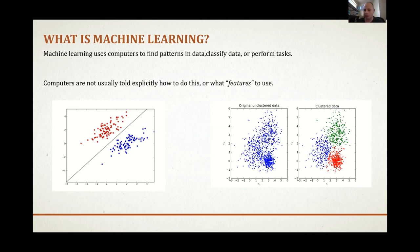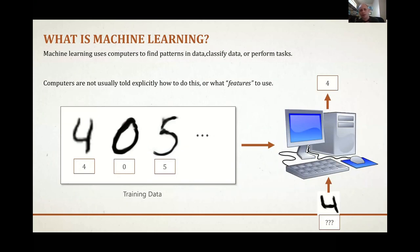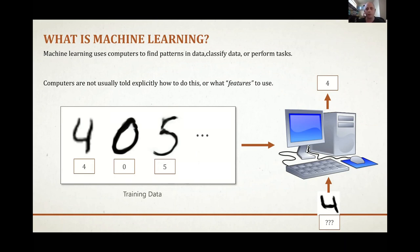As an example, say we wanted to train a computer to recognize handwritten digits. We'd get a training corpus — in this case, images from the MNIST repository. This is a supervised problem: we feed in examples with known labels, and the computer infers a model correlating raw images to labels. Once you've trained the model, if you've done a good job, feeding in a new example should with high probability produce the correct label — in this case, the digit four.